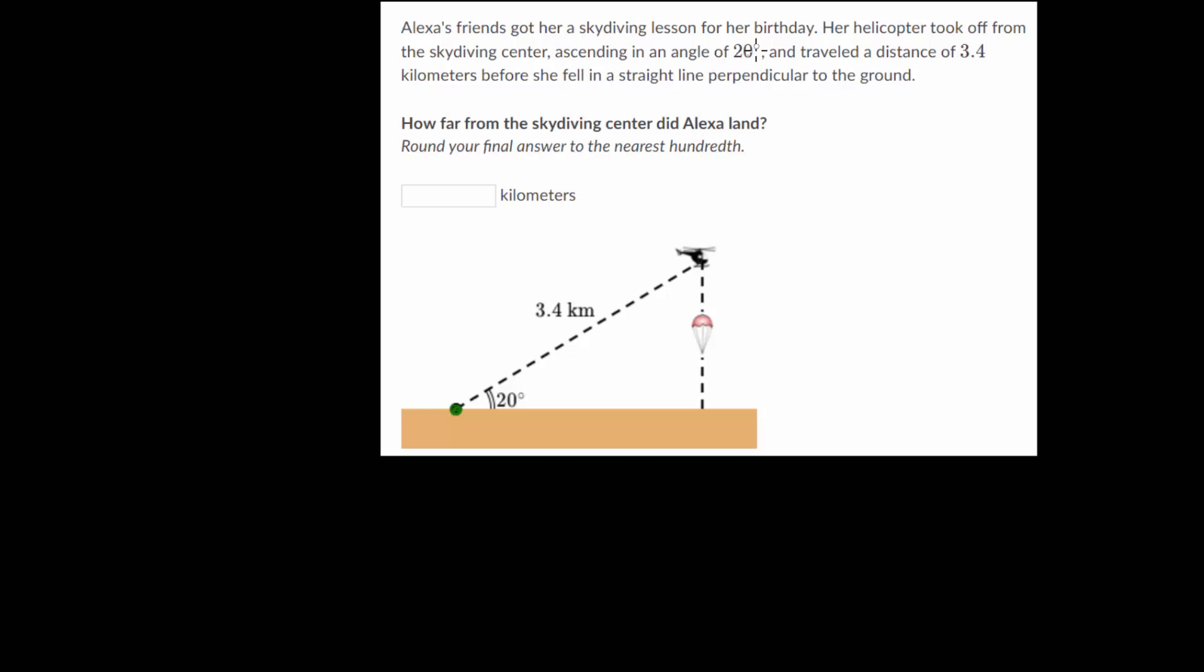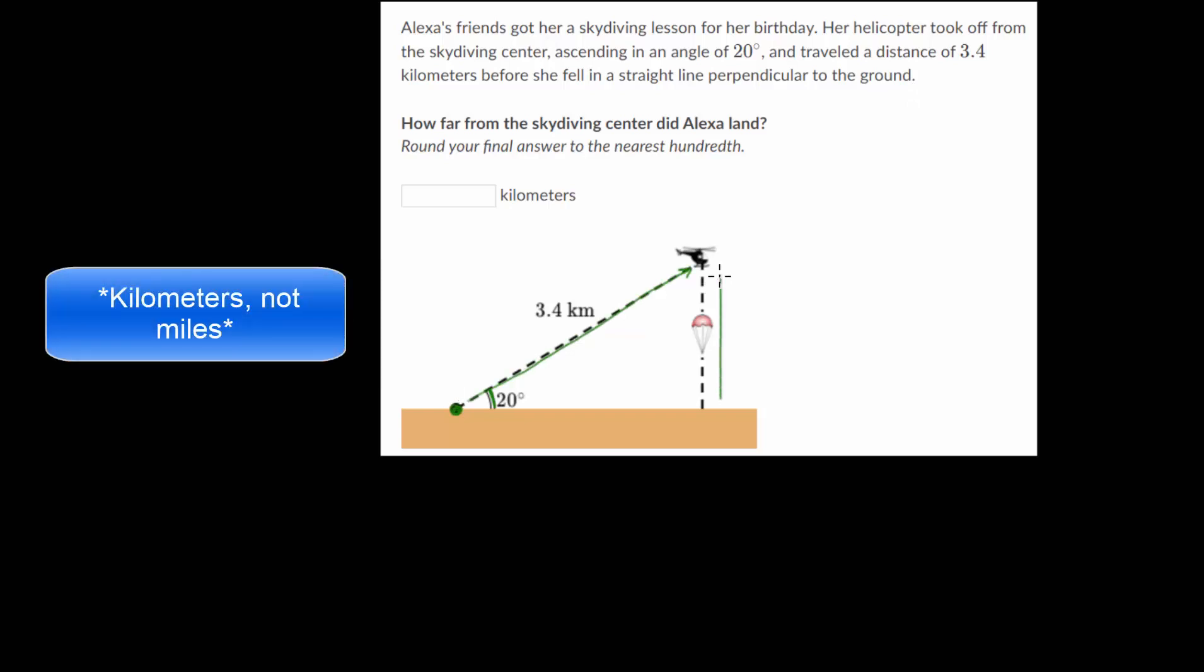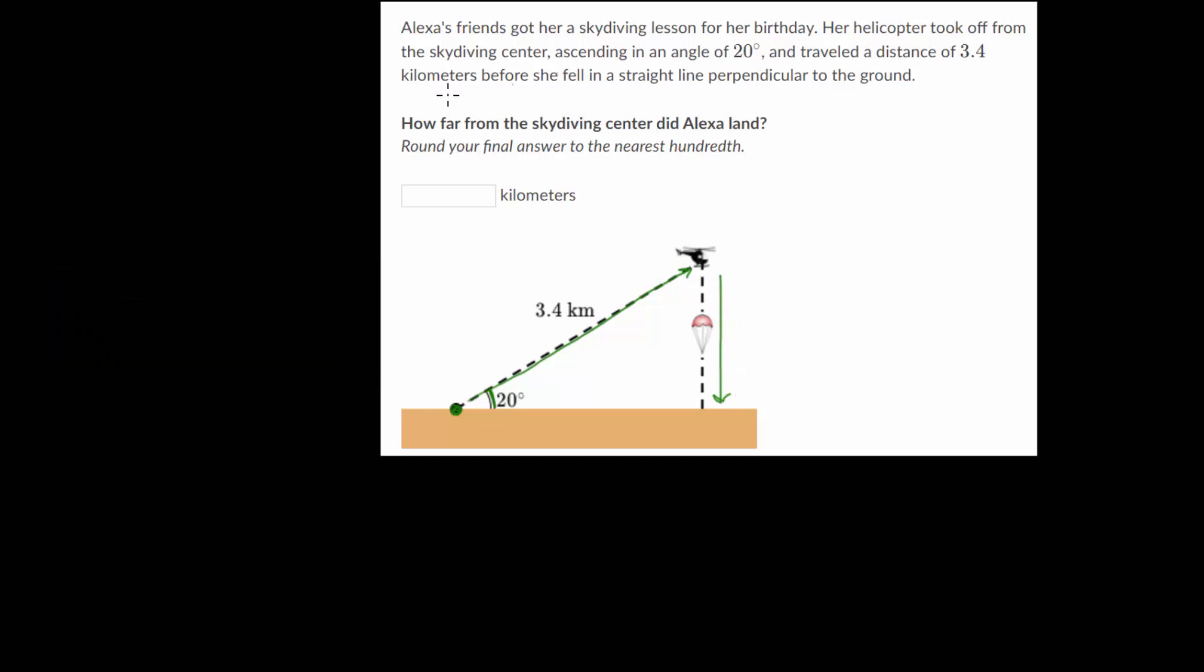ascending in an angle of 20 degrees, so that's this angle, and traveled a distance of 3.4 kilometers before she fell in a straight line perpendicular to the ground. So she went up in this direction for 3.4 miles and then fell straight down while skydiving.